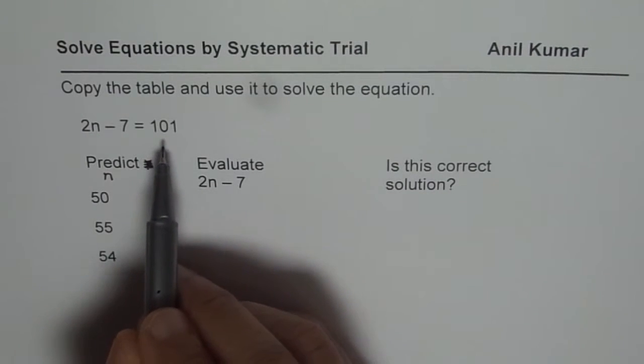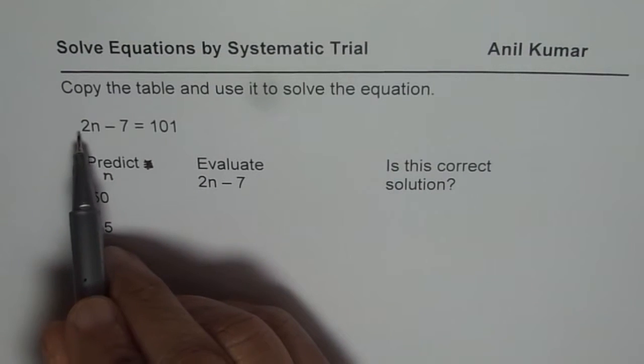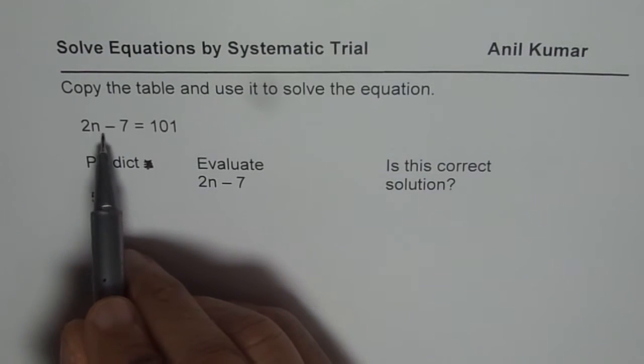If the expression is not the same, then we need to try the next value so that we come closer and closer to the expected value. That is the approach. Now we're looking for a value of 101 which should be 2n minus 7.